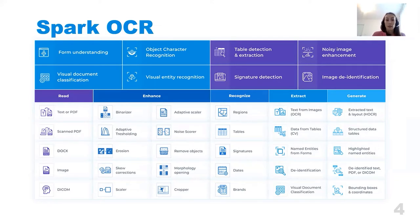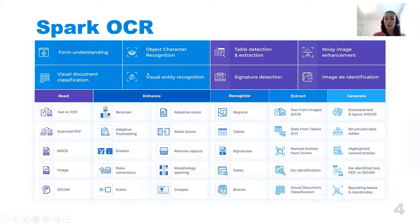Beginning from version 3.3, Spark OCR offers support for deep learning-based multimodal learning. We have recently added visual document classification, visual entity recognition, table extraction, and signature detection features.